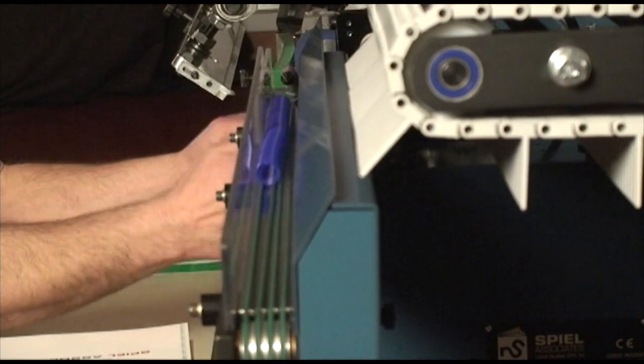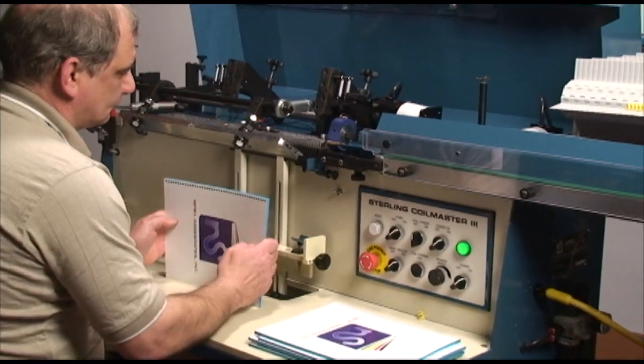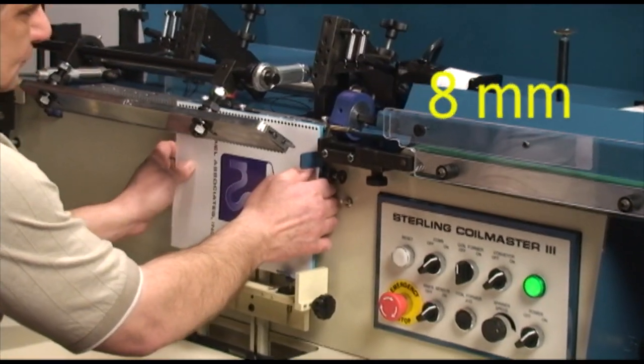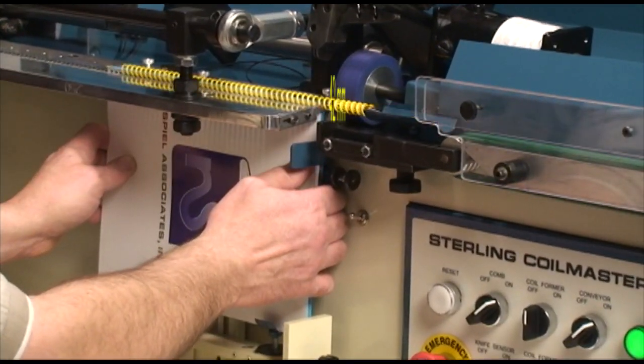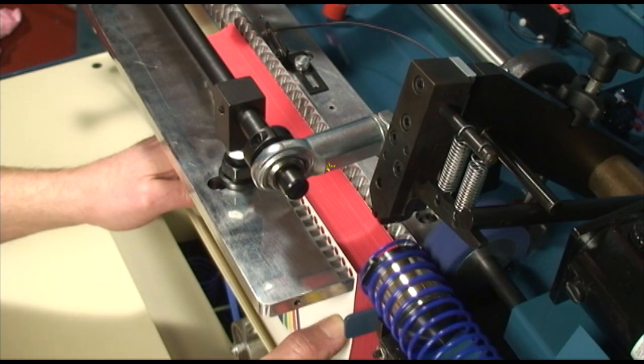The coil is fed onto the in-feed conveyor on the Coilmaster Inserter. The Inserter can bind books from 8 millimeters or 5-16ths of an inch, up to 42 millimeters or 1.7 inches in diameter.